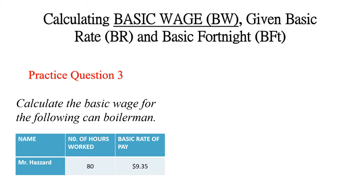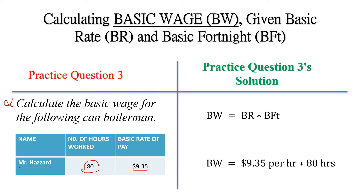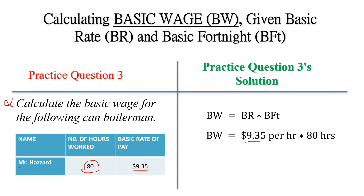We have another practice question. Calculate the basic wage for the following pan-boilerman, Mr. Hazard. He works 80 hours in a fortnight and gets paid at a rate of $9.65. We want to find his basic wage — that is basic rate times basic fortnight, which is $9.65 multiplied by 80 hours, giving us $748 as the basic wage. So Mr. Hazard would get paid $748 in that 80-hour fortnight.